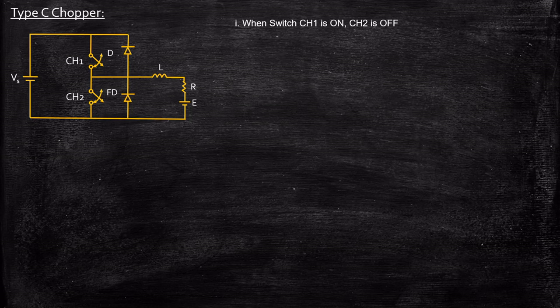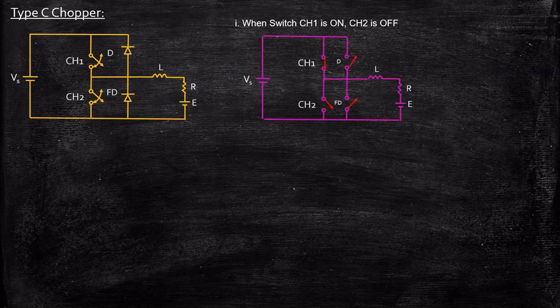Case 1: we are only going to turn on switch CH1 and CH2 will be off. Let us always consider drawing equivalent circuits because it is very simple for us to analyze. If you carefully observe, CH1 is shorted because its gate pulse is given to CH1, and as a result it is turned on. CH2 is turned off.